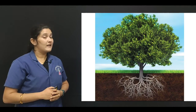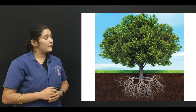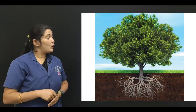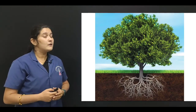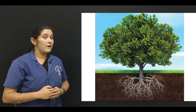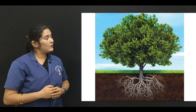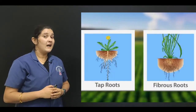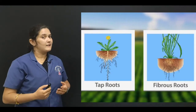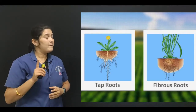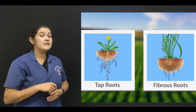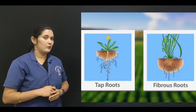Here you can observe a tree. Can you observe the roots? Observe the roots carefully. You have already learnt about what roots are and the two types of roots. They are tap roots and fibrous roots. Tap roots have one main root and many tiny roots that arise from that one main root.